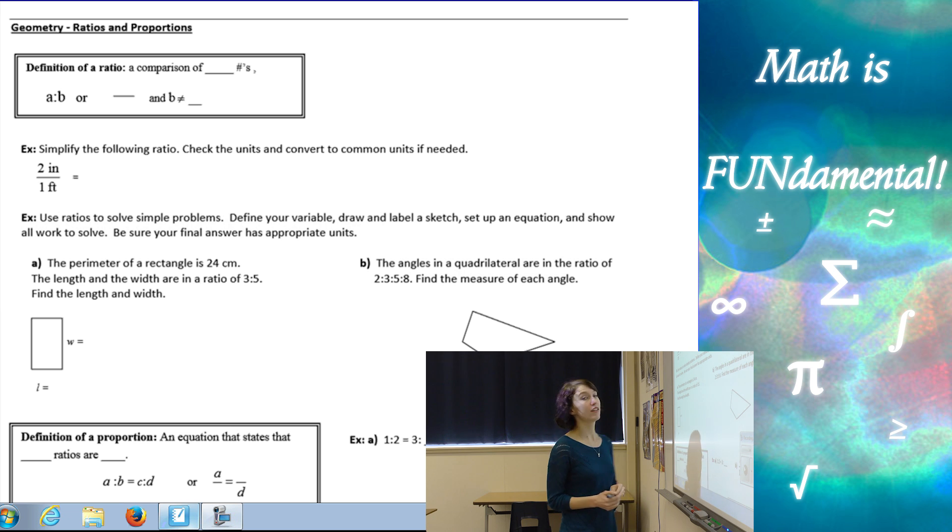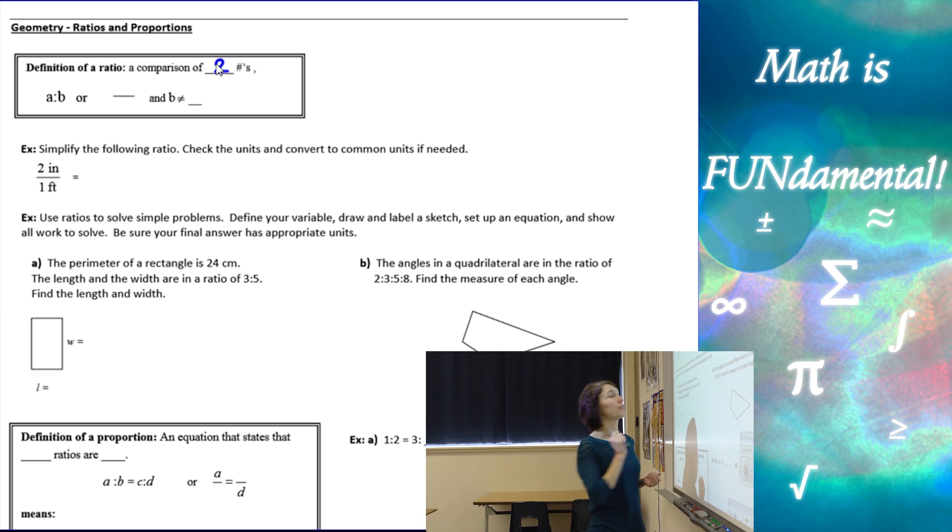We're going to start off with the definition of a ratio, which is a comparison of two numbers. Here we use variables to represent those numbers, so our numbers are going to be A and B. We can represent a ratio using this symbol here, A colon B, or we can represent it as a fraction, A over B. And because B is on the denominator, B cannot be zero. If you're converting from the first format to the fraction format, the second piece of your ratio always goes in the denominator.